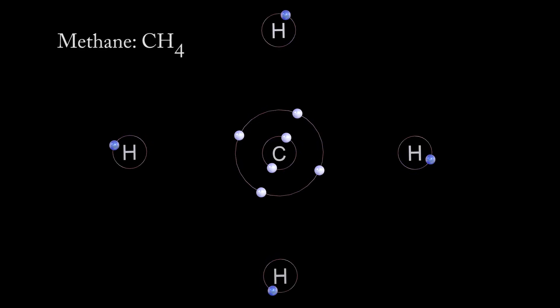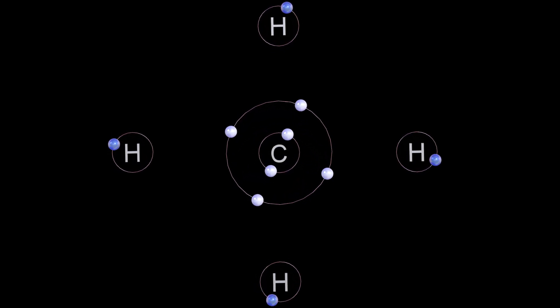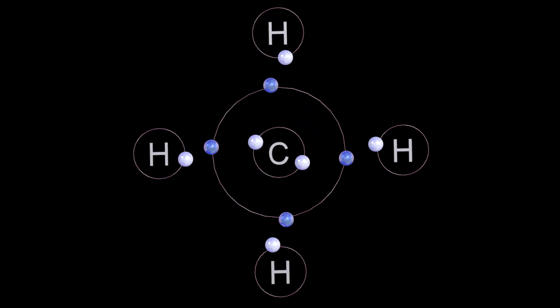So by looking at methane, we can see that this carbon has four electrons in its outermost shell. So what carbon does is that it will covalently bond, that is to say it will share electrons with the surrounding hydrogens. Hydrogen only needs two electrons in its outermost shell to become stable. So by sharing one hydrogen electron with one carbon electron, it can be seen that both of them have their outermost shells completely filled and that the overall compound is now stable.